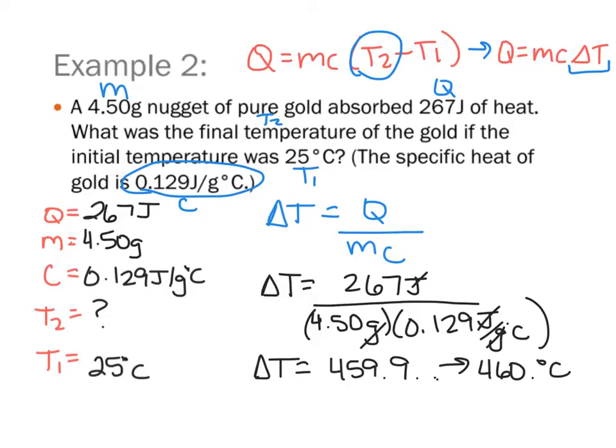So remembering that delta T is actually T2 minus T1, then if I'm trying to figure out my T2, if I solve for that, T2 is going to be, if I add T1 to both sides.